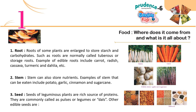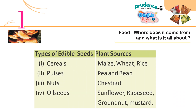Two — Stem: Stems can also store nutrients. Examples of stems that can be eaten include potato, garlic, cinnamon and sugarcane. Three — Seed: Seeds of leguminous plants are a rich source of proteins. They are commonly called pulses, legumes or dals. Other edible seeds include cereals such as wheat and rice, pulses like pea and bean, nuts like chestnut, and oil seeds such as sunflower, grape seed, groundnut and mustard.